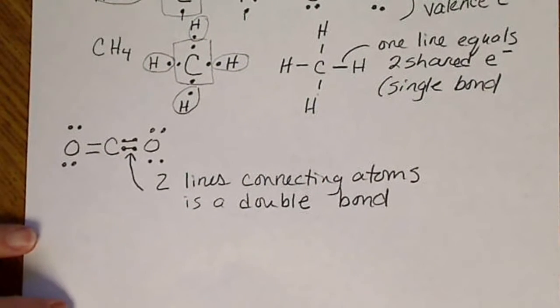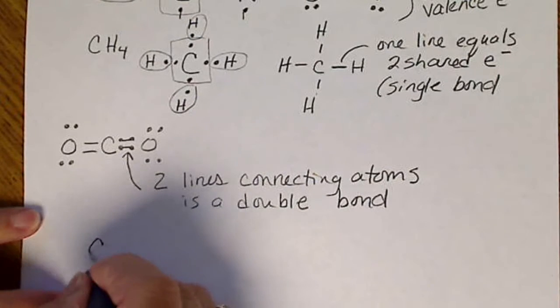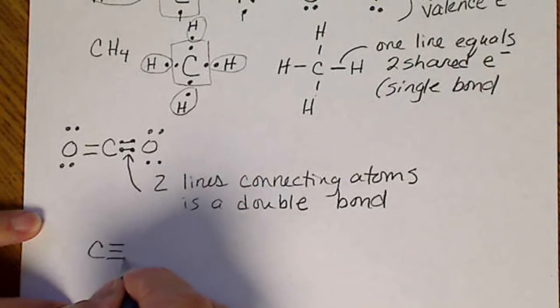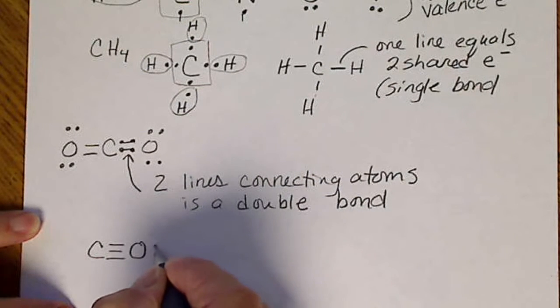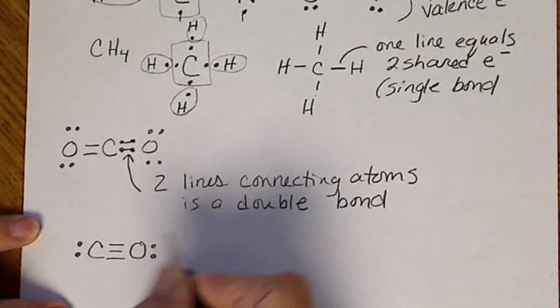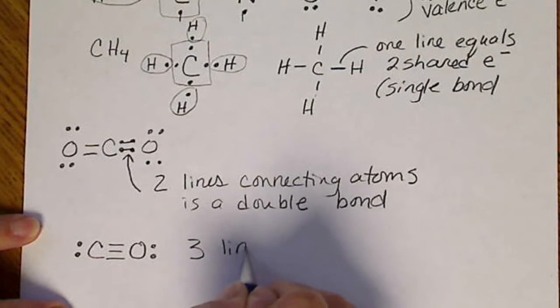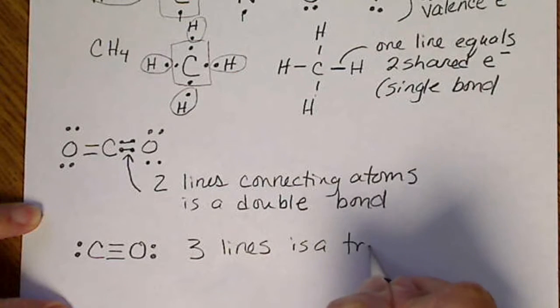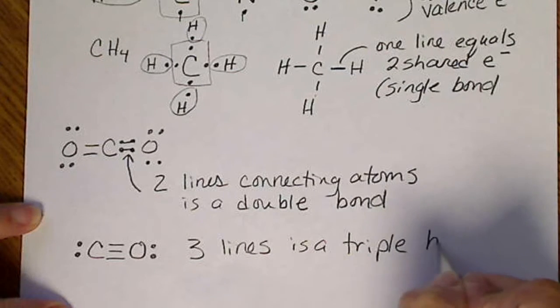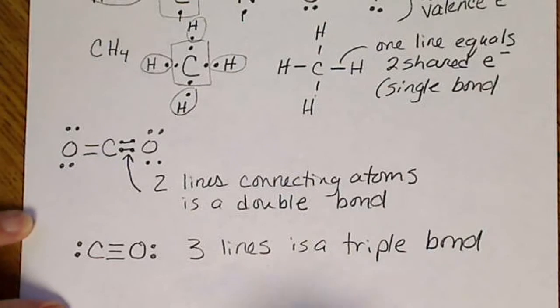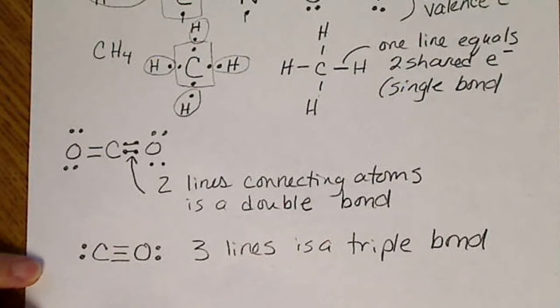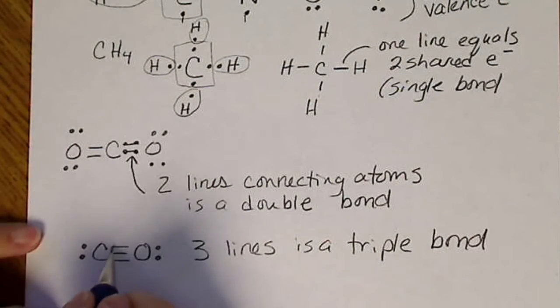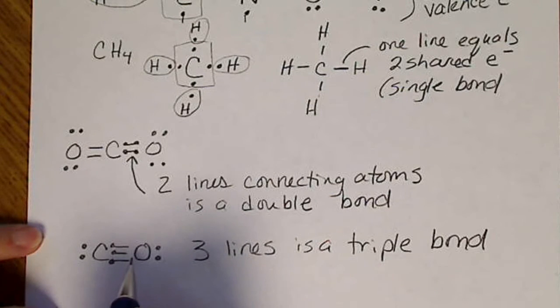And then carbon monoxide ends up having a triple bond. So three lines connecting atoms is referred to as a triple bond. And we haven't discussed why the compounds were arranged like this, but we're going to go back to that magic number eight.